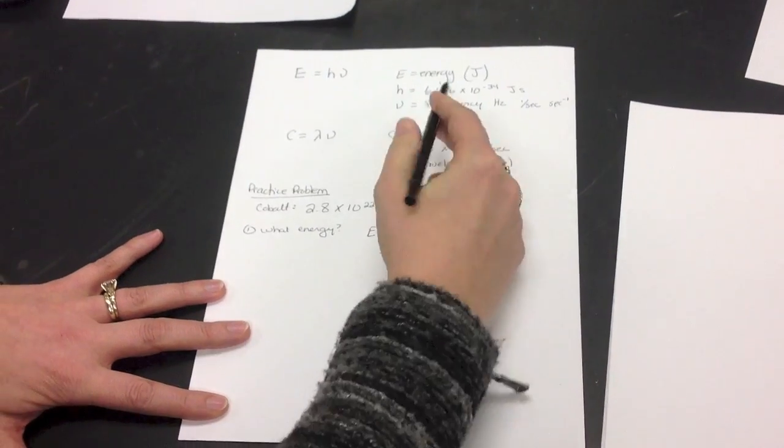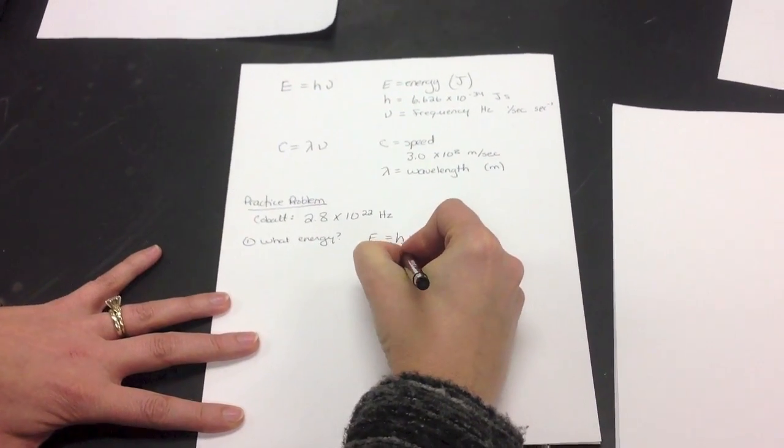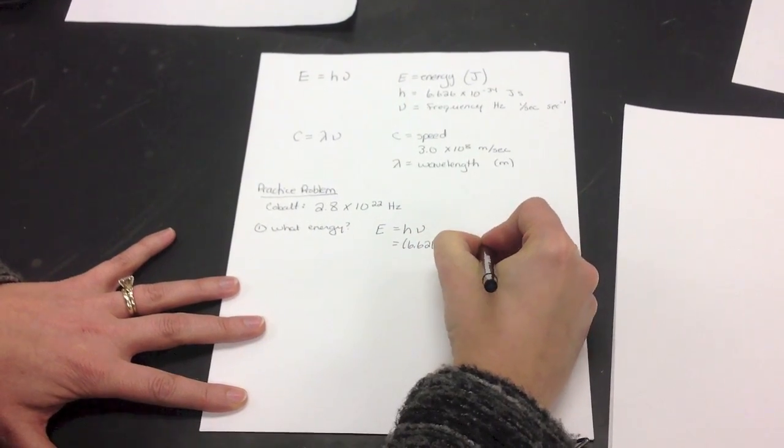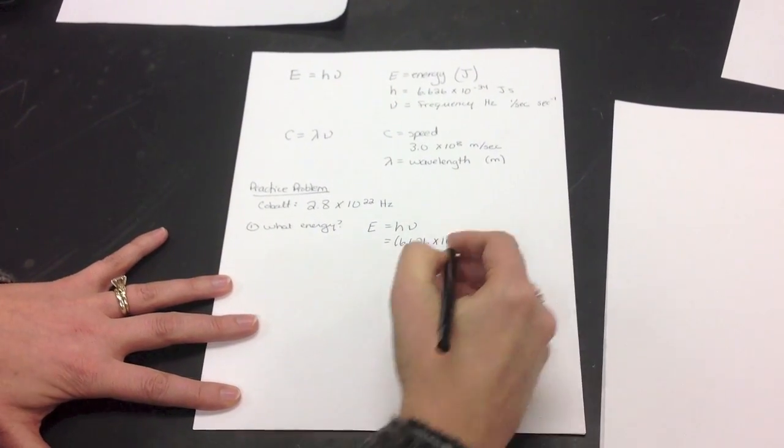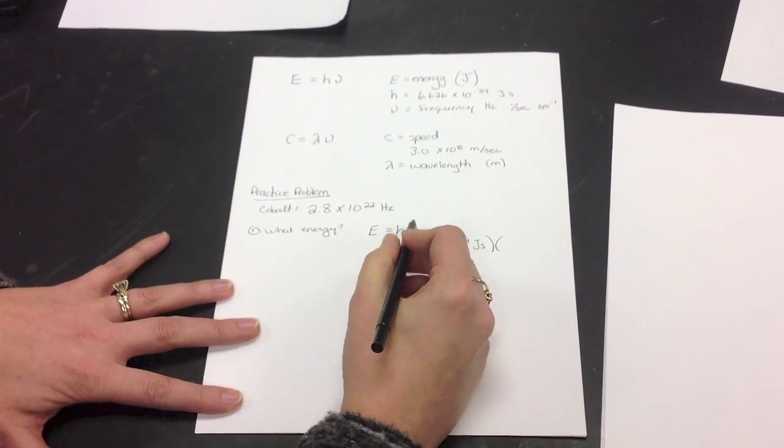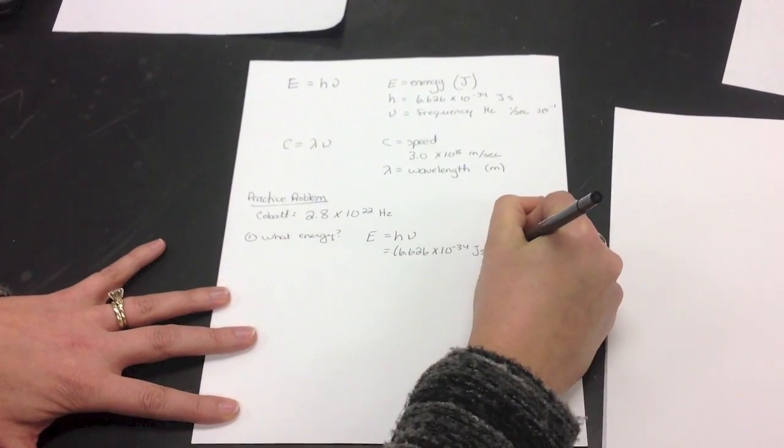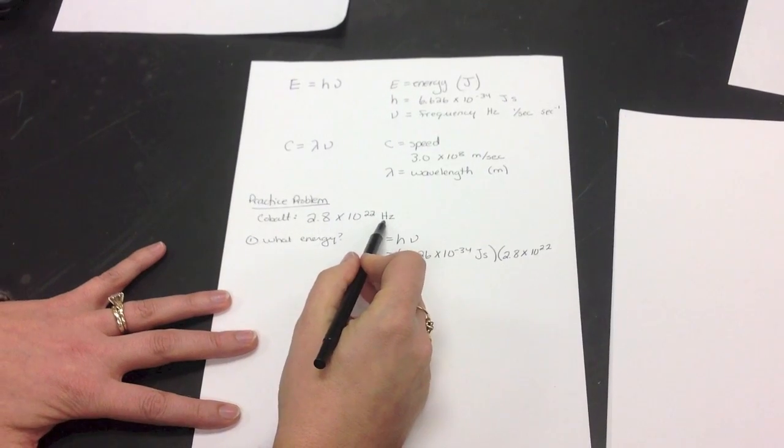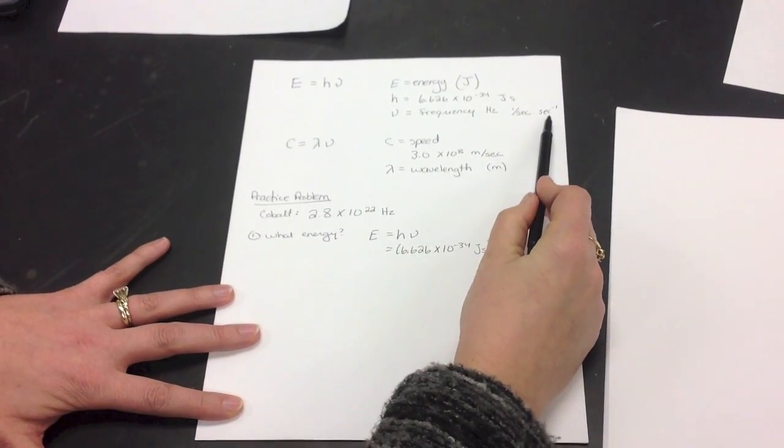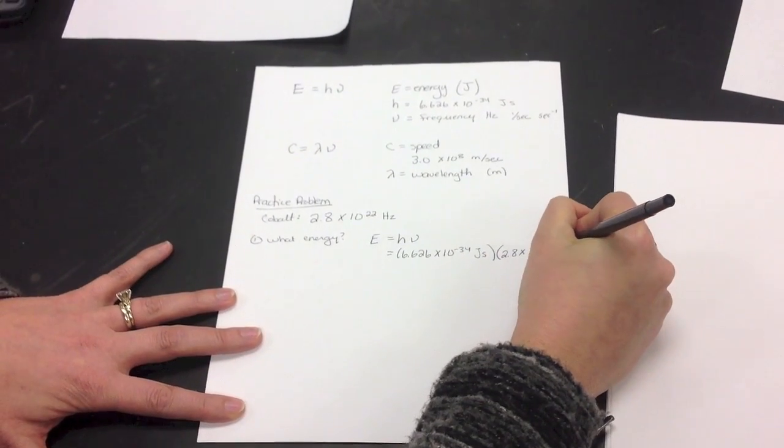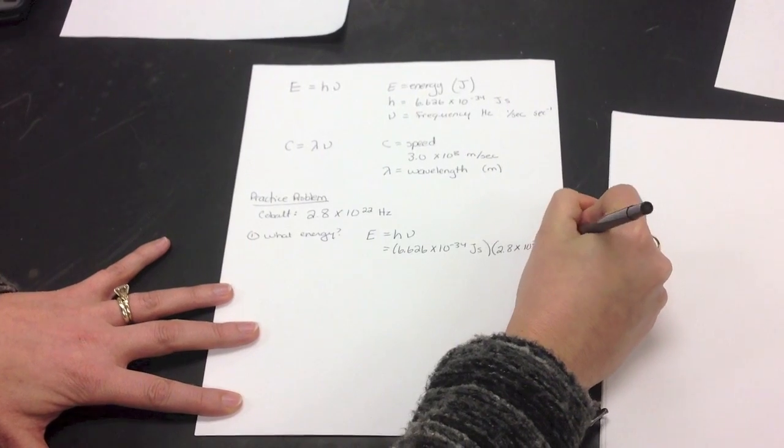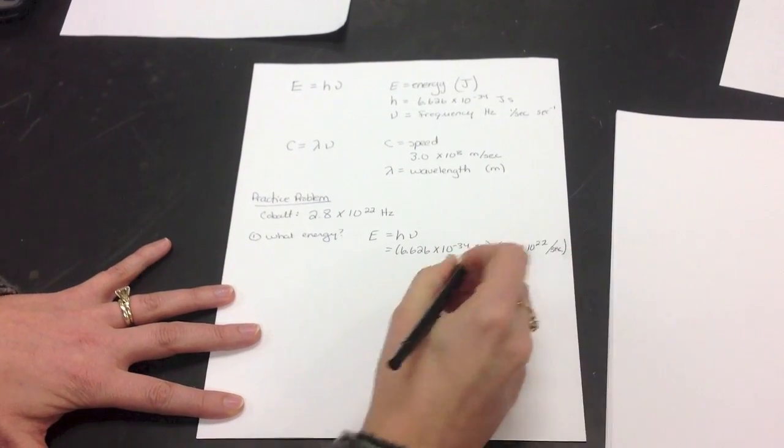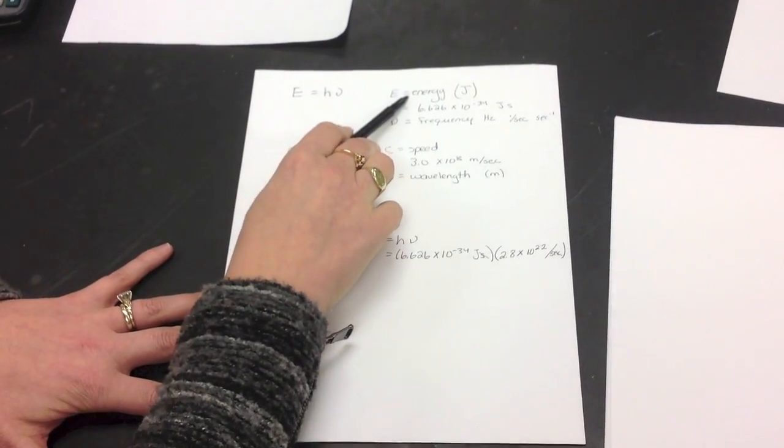We plug in H, which we have up here, 6.626 times 10 to the negative 4th joule seconds, times frequency, which is this, 2.8 times 10 to the 22nd. Now, instead of writing hertz, I'm going to write per second. Because then I can see that my seconds here and my seconds here cancel, which leave me with just joules, which is what we want for energy.